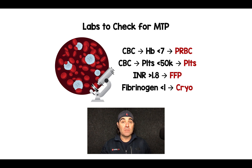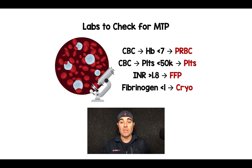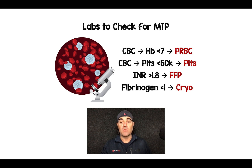I check labs pretty frequently — maybe every couple of hours in seriously hemorrhaging patients. If hemoglobin is less than 7, they're getting packed red blood cells. If platelets are less than 50,000, they're getting platelets. If INR is greater than 1.8, they're getting fresh frozen plasma. And if fibrinogen is less than 1 gram per liter, I'm giving cryoprecipitate.